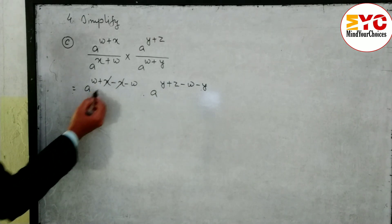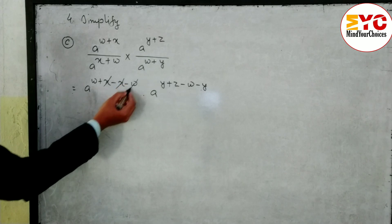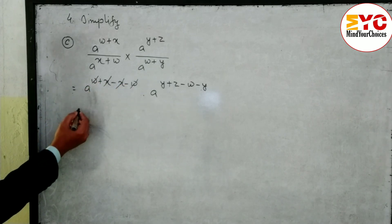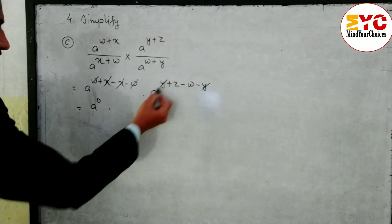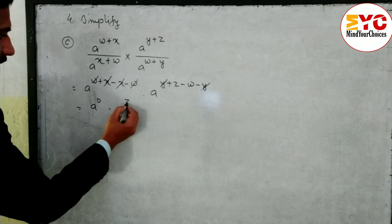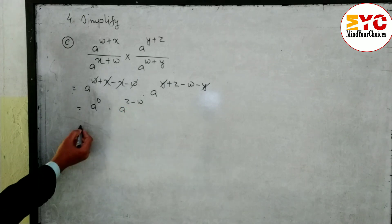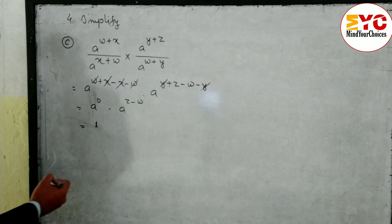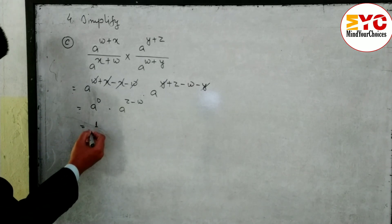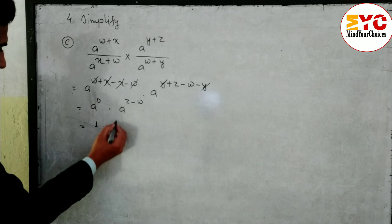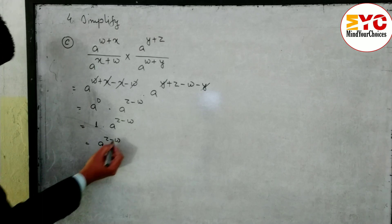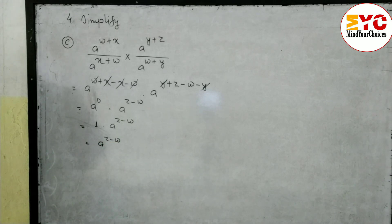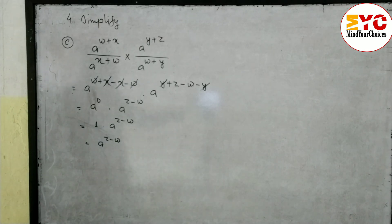You can see x and x cancel, w and w cancel. Then y and y cancel, remaining a power (z minus w). One part gives a power 0 which equals 1, and remaining is a power (z minus w). When you multiply, you get a power (z minus w). Hope you understand question number (c).